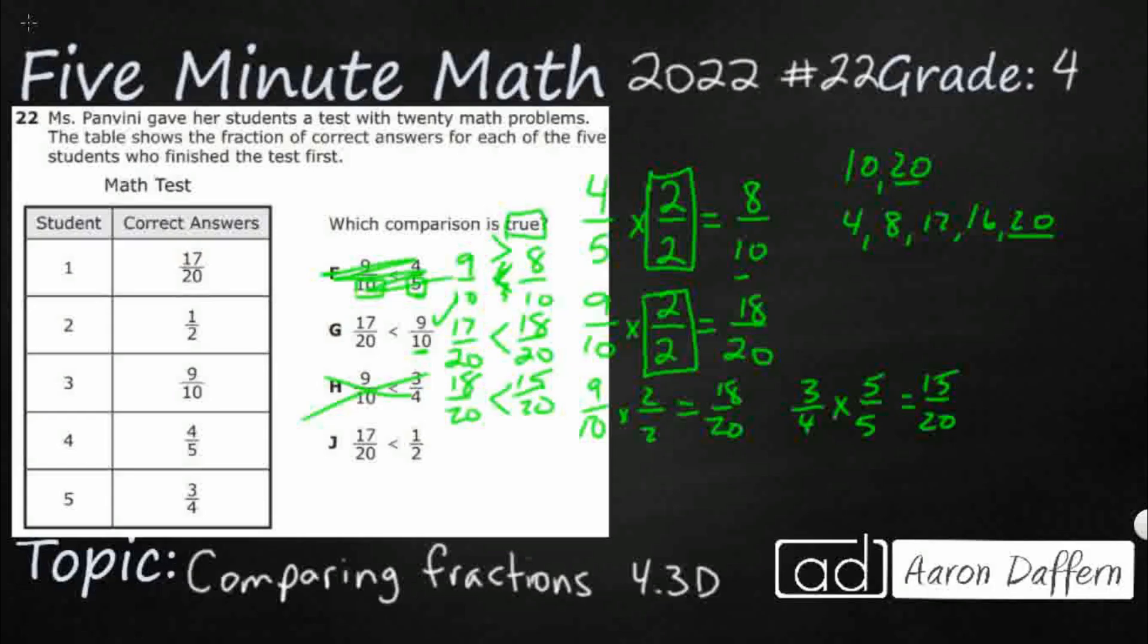And look at this. Okay. My 2 can get up into 20, so I can leave my 17 twentieths alone. Watch this. 1 half times something is going to equal 20. 2 times 10. So my numerator needs to be 10. So I'm going to rewrite this. 17 twentieths is less than 10 twentieths. See how obvious it is once we get our same denominator? That is incorrect. It's greater than.